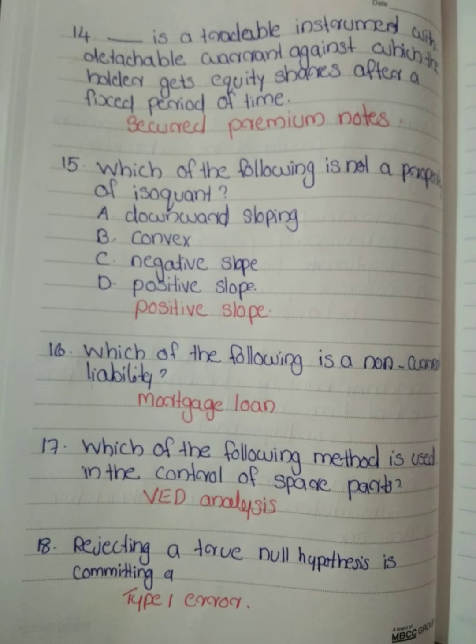Rejecting a true null hypothesis is committing a Type 1 error.